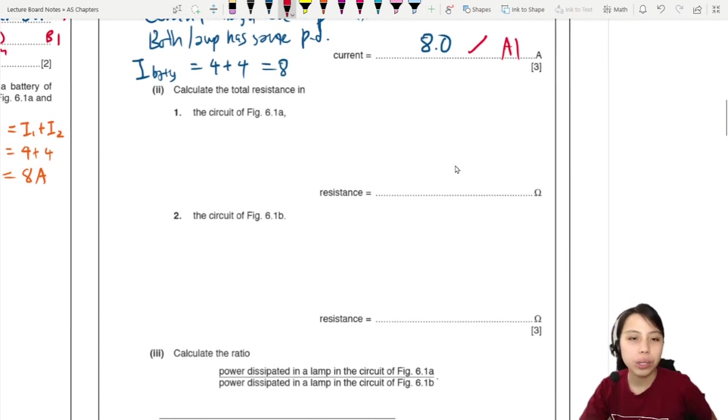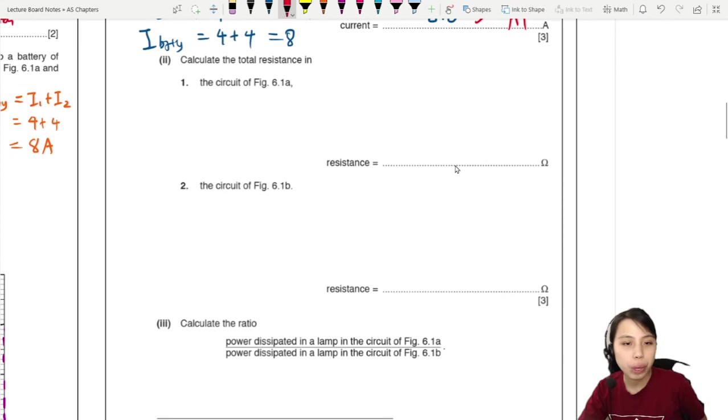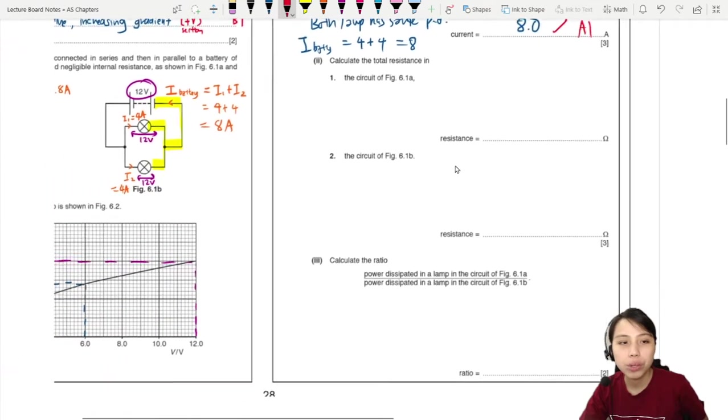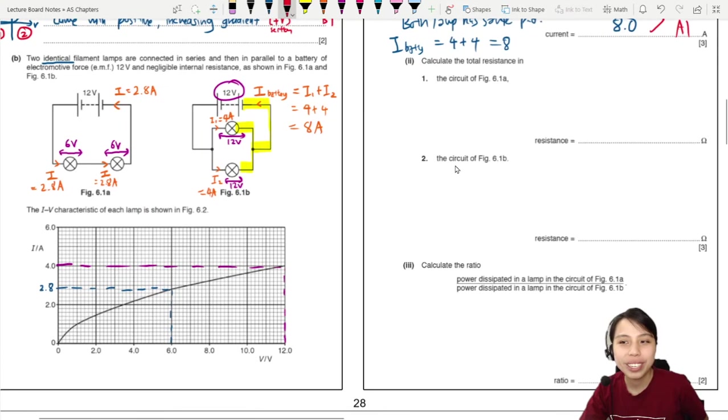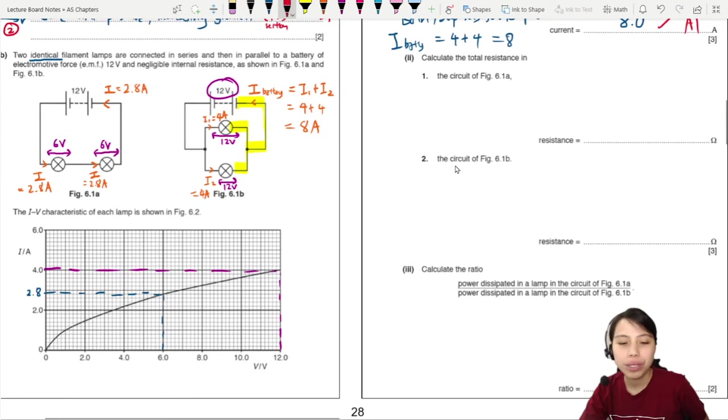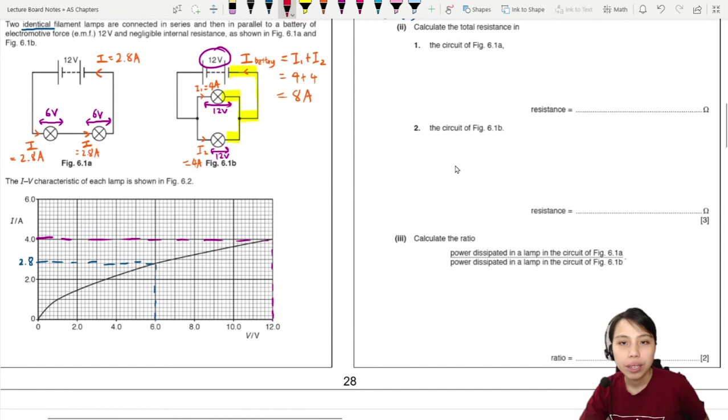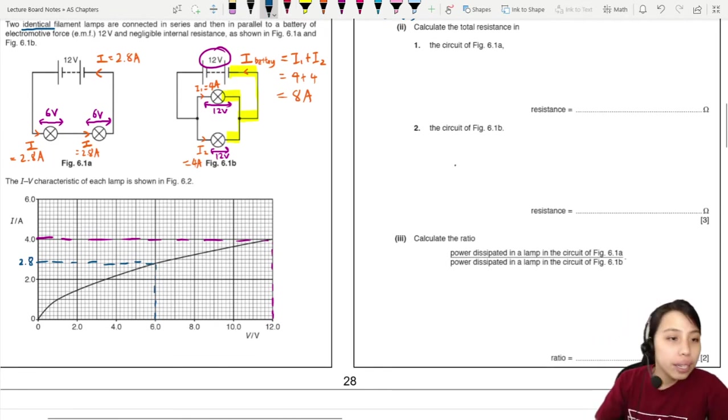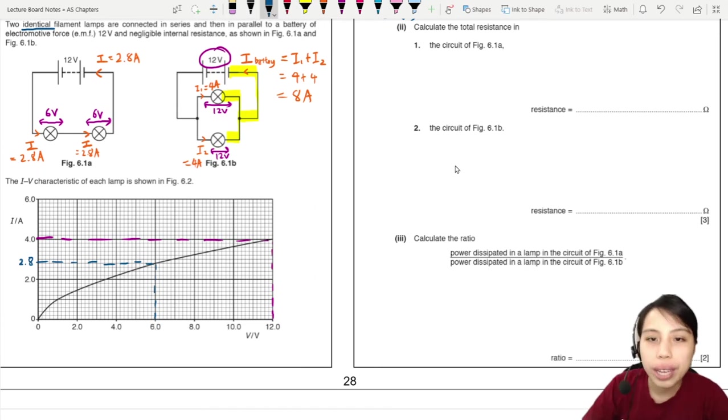Now let's find the total resistance for the circuit in 6.1A and 6.1B. So for 6.1A, these two, you can treat the lamps as like resistor in series. So we're going to add together. Total resistance will be R1 plus R2.